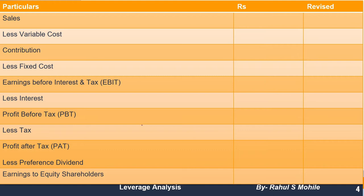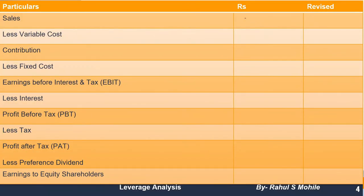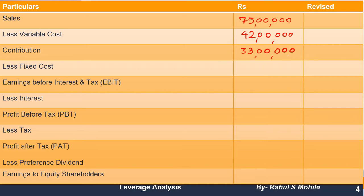Sales is 75 lakhs, variable cost is 42 lakhs, fixed cost is 6 lakhs. We will first calculate normally, and the revised part will be solved later. So: sales 75 lakhs minus variable cost 42 lakhs gives us contribution of 33 lakhs. Contribution minus fixed cost of 6 lakhs gives us EBIT of 27 lakhs. This format is very important — if you present it correctly, the calculation becomes very simple.